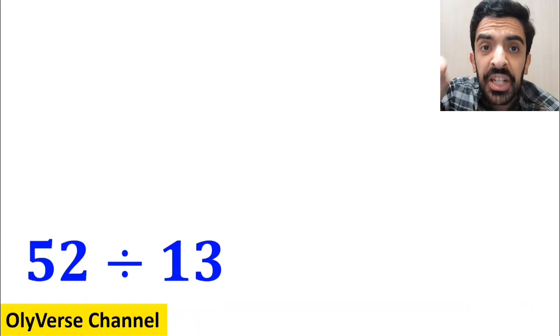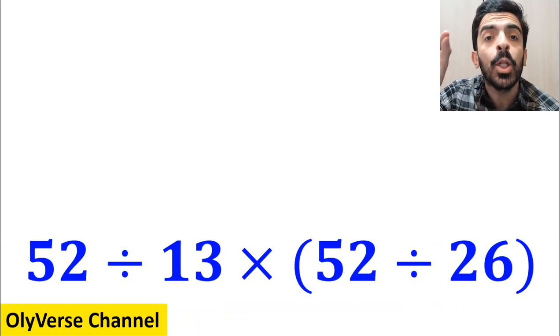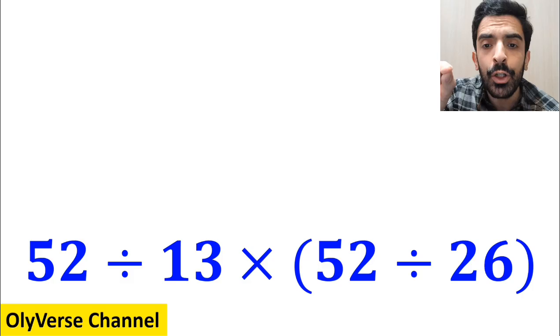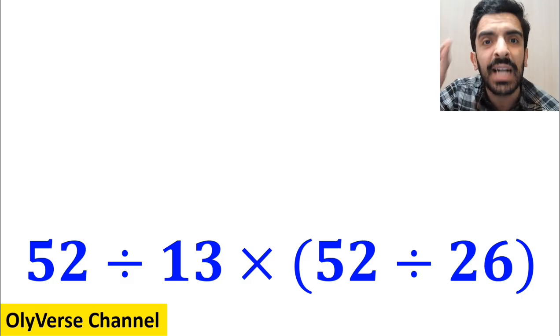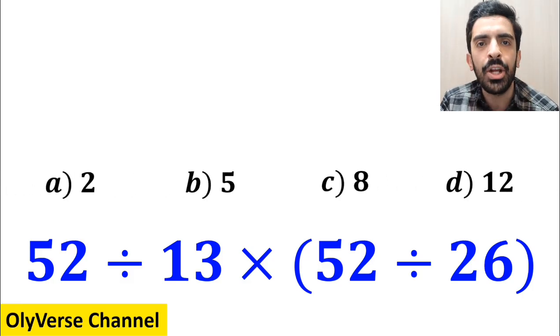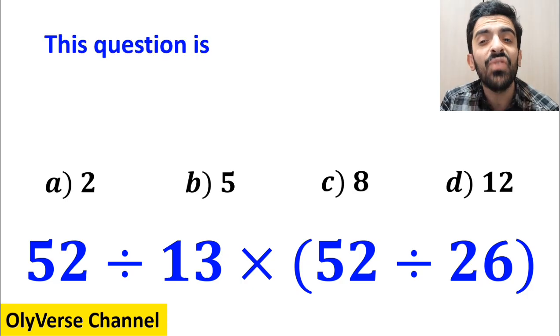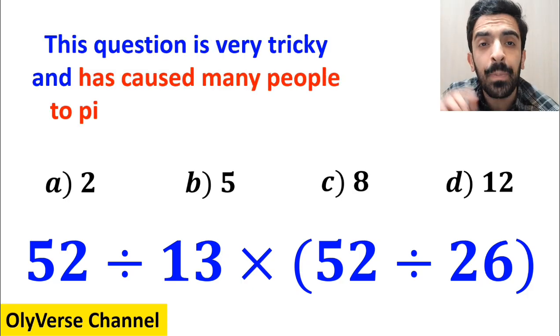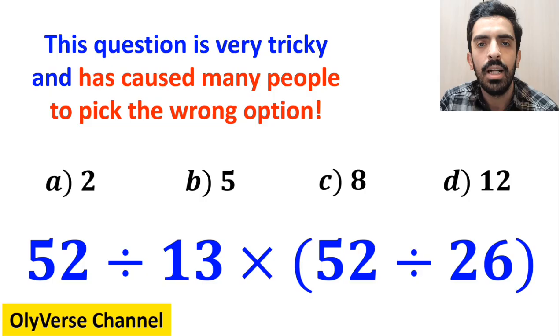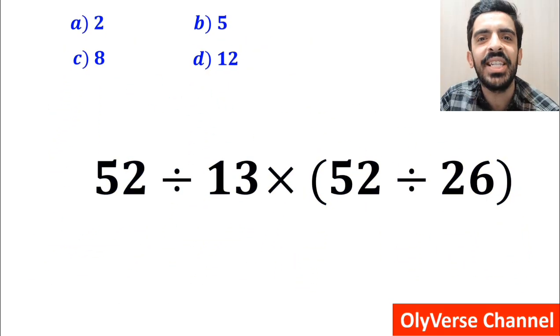What is the value of the expression 52 divided by 13 multiplied by open parenthesis 52 divided by 26 closed parenthesis? Which option do you think is the correct answer to this question? This expression is very tricky and has caused many people to pick the wrong option. Let's go and simplify and solve it together.